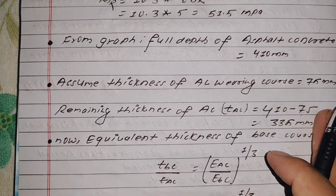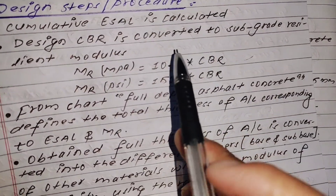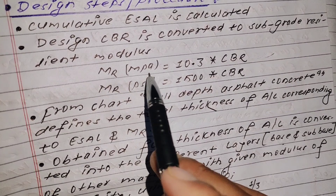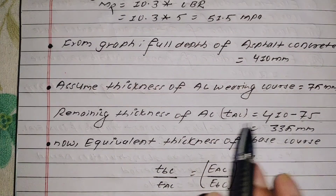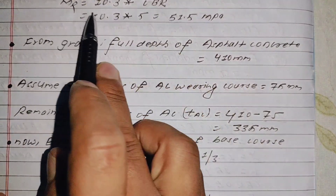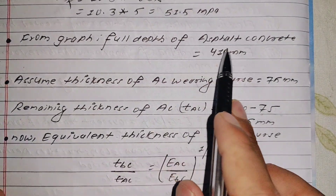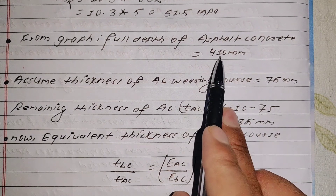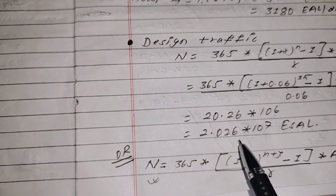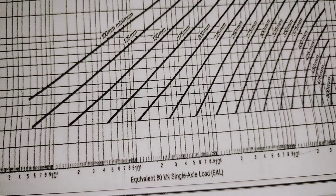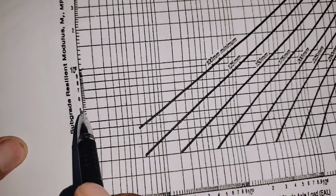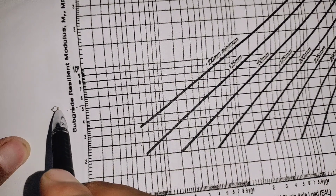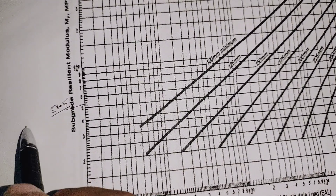Now, subgrade resilient modulus: converting subgrade CBR to subgrade resilient modulus. The formula used is: Mr = 10.3 × CBR. So Mr = 10.3 × 5 = 51.5 MPa. The subgrade resilient modulus value is 51.5 MPa.